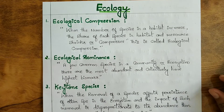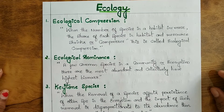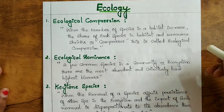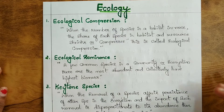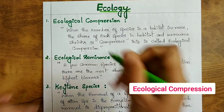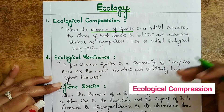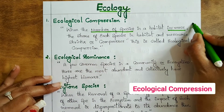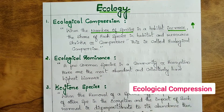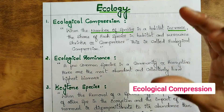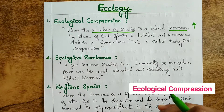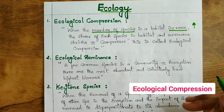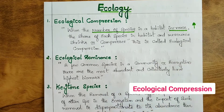The first term is ecological compression. The definition is: when the number of species in a habitat increases, the share of each species in the habitat and its resources shrinks or compresses. This is called ecological compression. It is very easy — just try to understand the concept.